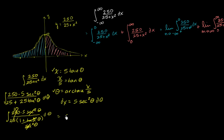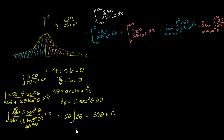So the integral simplifies to 50 d theta, which equals 50 theta plus C. But we only need the most basic antiderivative to evaluate these definite integrals, and we have it in terms of theta, so let's write it in terms of x. Since theta equals arctangent of x over 5, the antiderivative is 50 arctangent of x over 5.